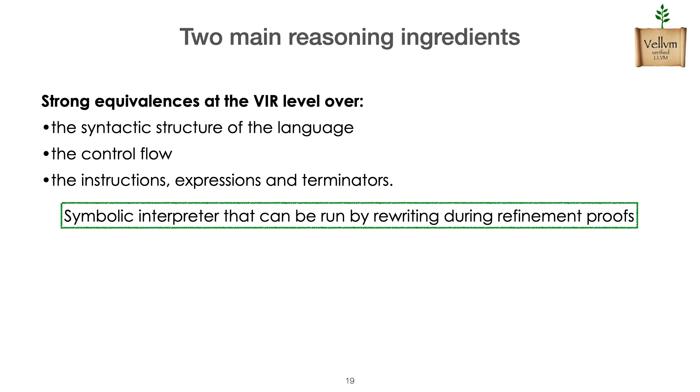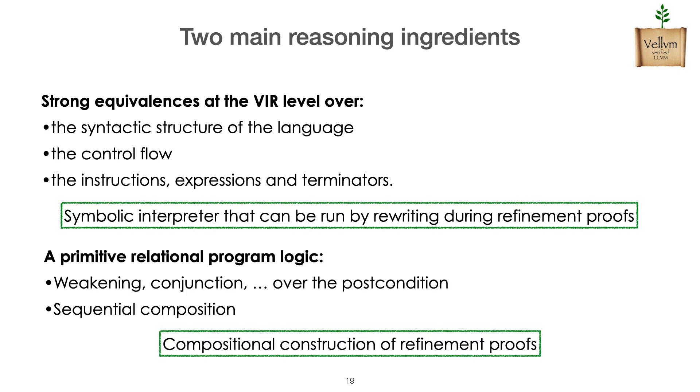Actually, these refinement proofs can be performed from VIR to VIR, but also in a heterogeneous way when interfacing with other languages for front-end or back-end for instance. And in particular, when we do so, what we get is a primitive relational program logic that, in particular, is compatible with this symbolic interpreter. We are therefore able to combine both of these ingredients to have interesting compositional reconstruction of refinement proofs by equational means.